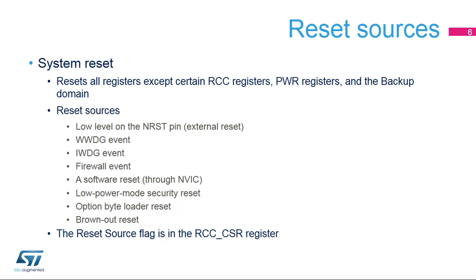Additional system reset sources include a low power mode security reset, which is generated when stop, standby, or shutdown mode is entered but is prohibited by the option byte configuration; an option byte loader reset; and a brownout reset. The reset source flag can be found in the RCC control and status register.